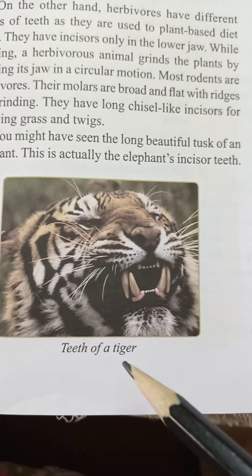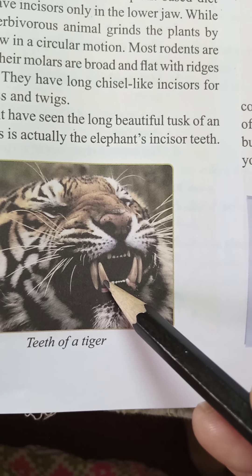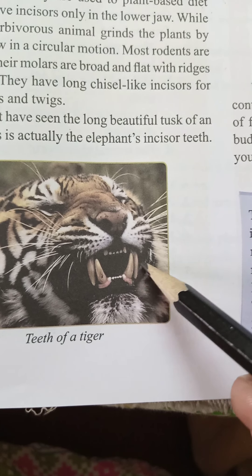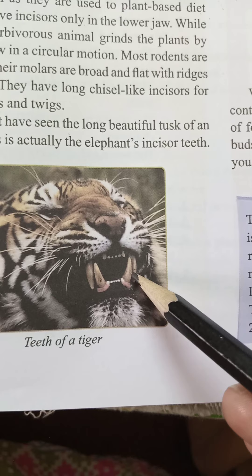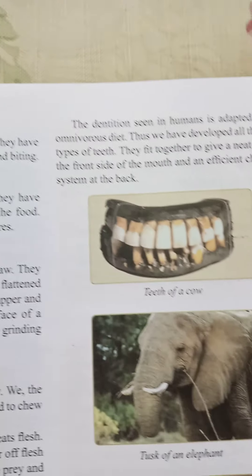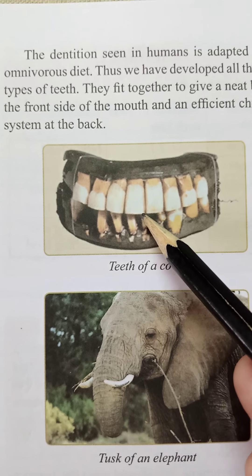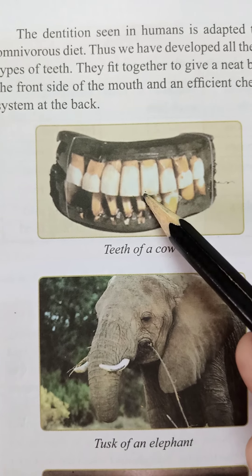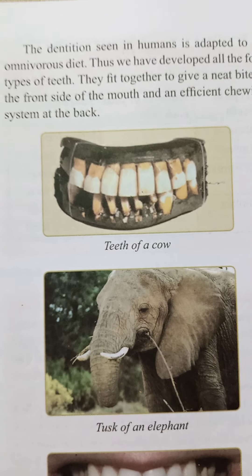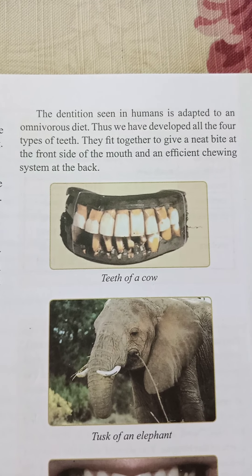Looking at this picture of a tiger, you can see its canines are well developed — they are pointed and protruding outward. This allows them to tear flesh easily. In contrast, a cow's teeth are broader and suited for chewing, with a well-developed chewing process.